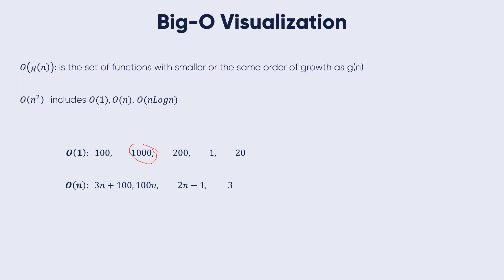Another example is O(n). These numbers: we have 3n + 100, 100n, 2n - 1, and 3.